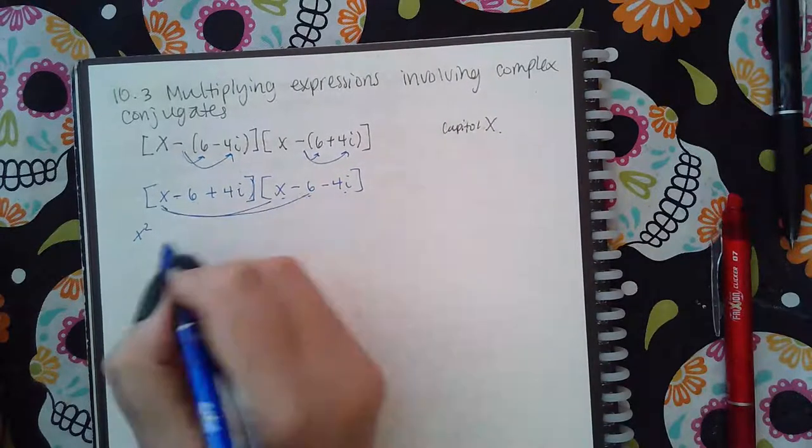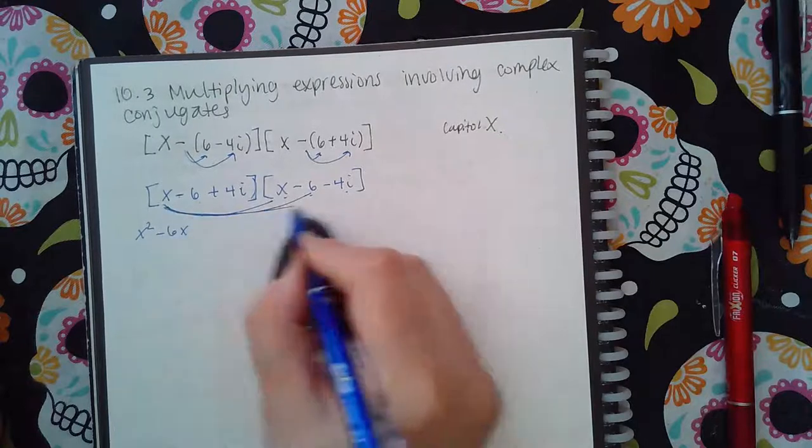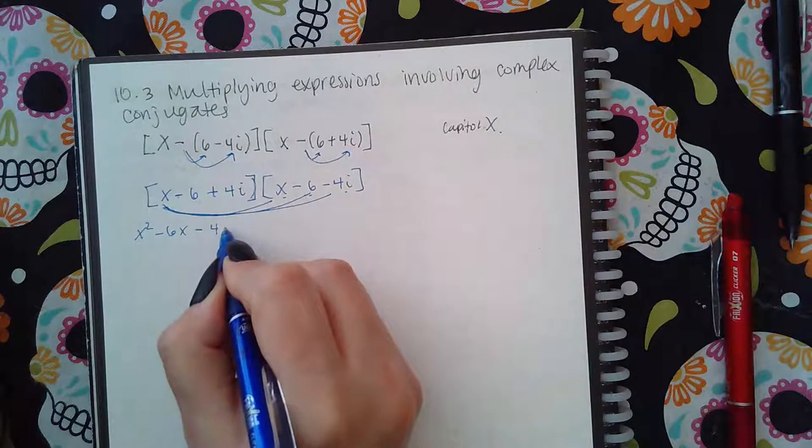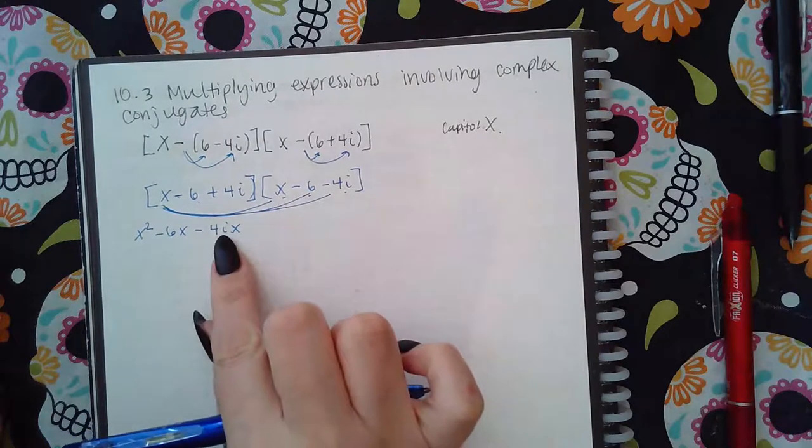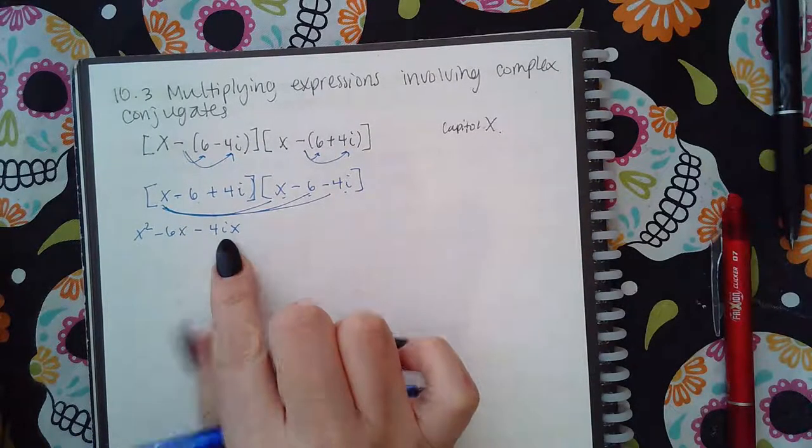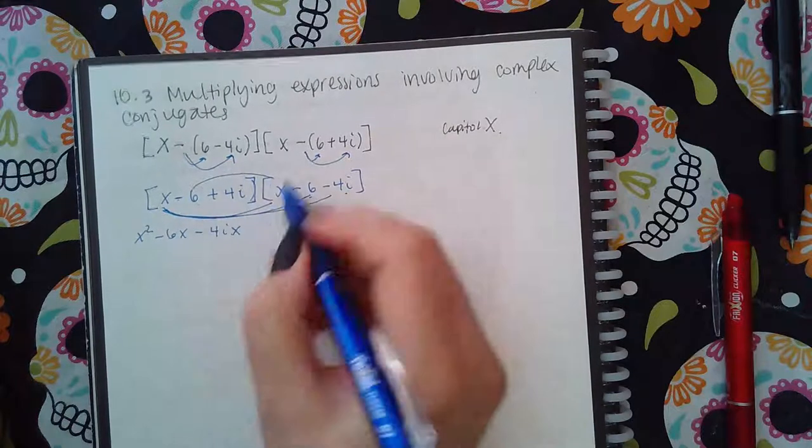Let's see, that's gonna give me X squared minus six X minus four iX. I always put the variable on the right; i is like a number, just an imaginary number. Then the negative six times negative six is positive 36.